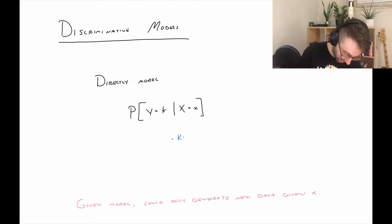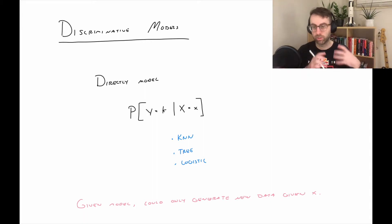So KNN, it's pretty clear that we're just directly modeling this. We're looking at the nearest neighbor and so on. Trees do that, but in a slightly different way. And with logistic, this is very clear, right? We're just directly modeling the probability that Y is one given some values of X.